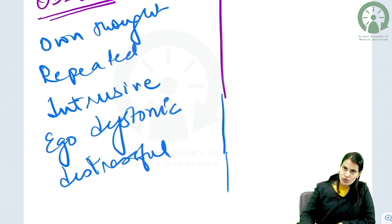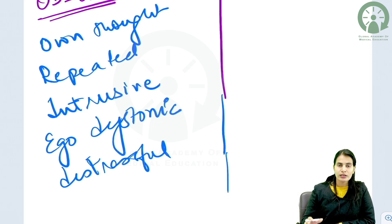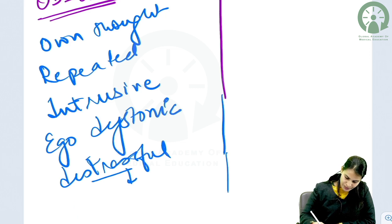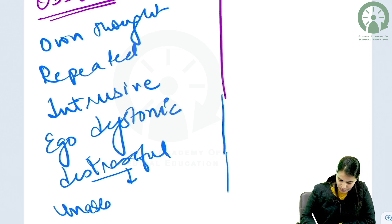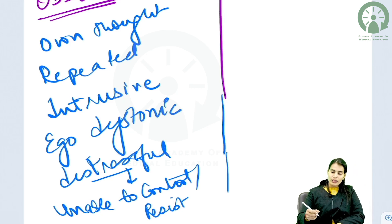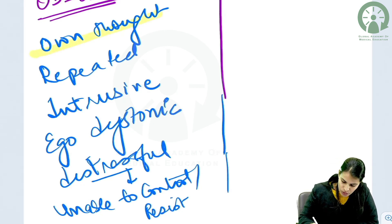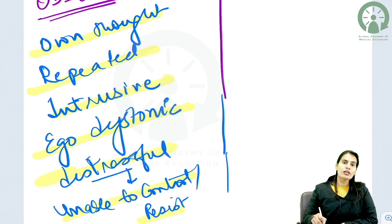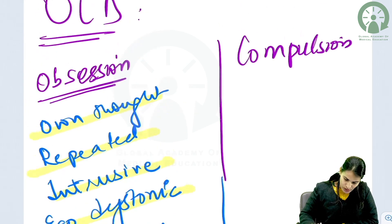If a person tries to stop or resist these thoughts, they would feel extreme anxiety, so they are unable to control or resist them. Despite being one's own thoughts, they cannot be controlled. They are repeatedly and intrusively present, ego-dystonic, causing distress, and the person is unable to resist or control these thoughts. So these are obsessions.